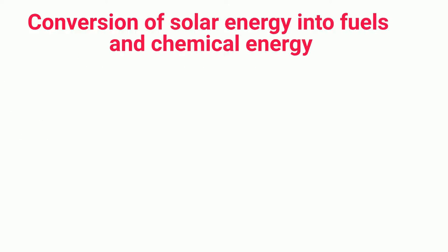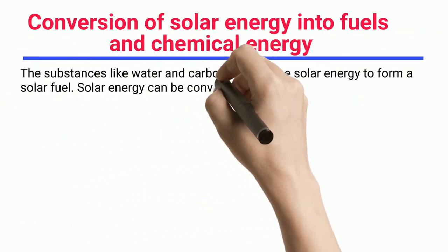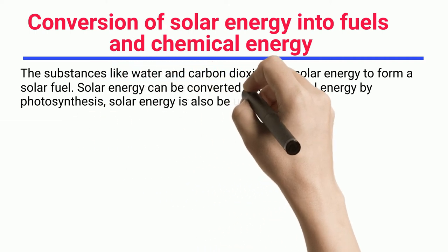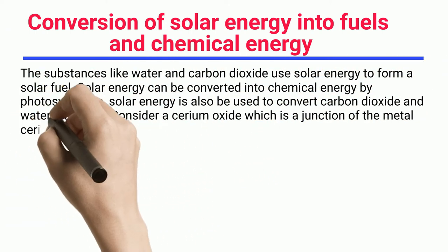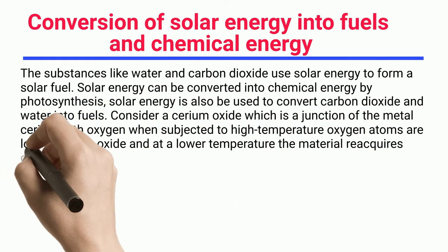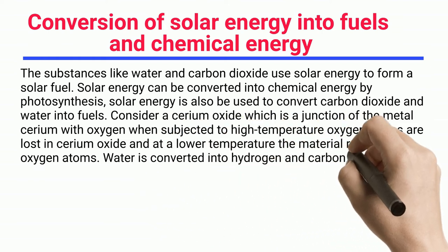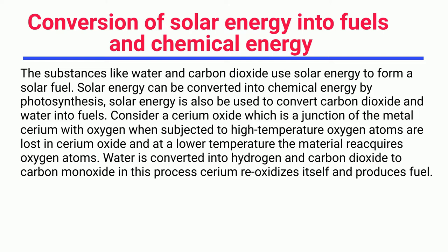Conversion of solar energy into fuels and chemical energy: substances like water and carbon dioxide use solar energy to form solar fuels. Solar energy can be converted into chemical energy by photosynthesis, and it can also be used to convert carbon dioxide and water into fuels. Consider cerium oxide — a compound of cerium and oxygen. At high temperatures, oxygen atoms are lost from cerium oxide; at lower temperatures, the material reacquires oxygen atoms, converting water into hydrogen and carbon dioxide into carbon monoxide, causing cerium to re-oxidize and produce fuel.